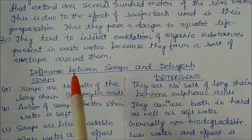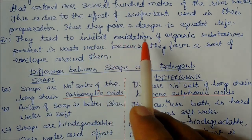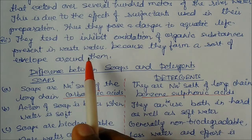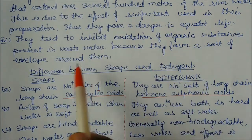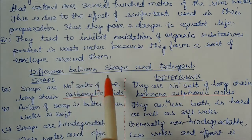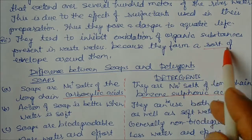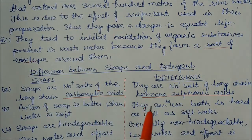Detergents also tend to inhibit the oxidation of organic substances present in wastewater. They form a sort of envelope around these substances, due to which oxidation is stopped.